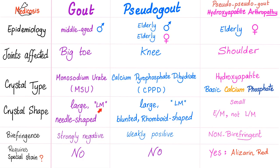Monosodium urate crystals are needle-shaped. Pseudogout crystals are large and blunted rhomboid in shape. Pseudo-pseudogout crystals are very small. Birefringence: strongly negative for gout, which means yellow when parallel. Weakly positive for pseudogout, which means blue when parallel. Non-birefringent for hydroxyapatite.